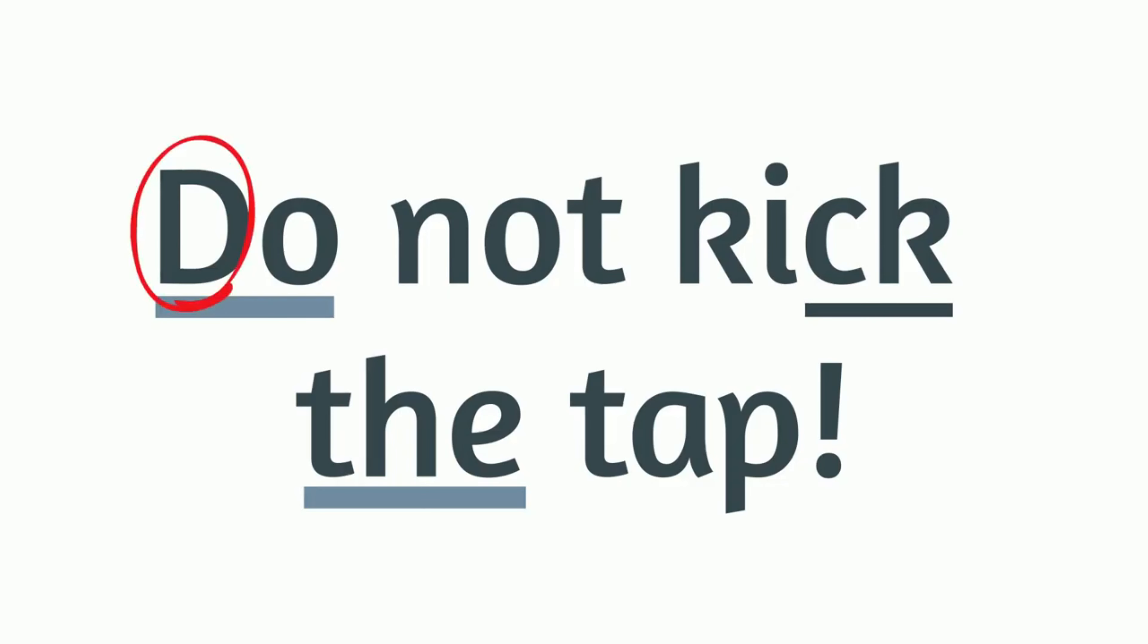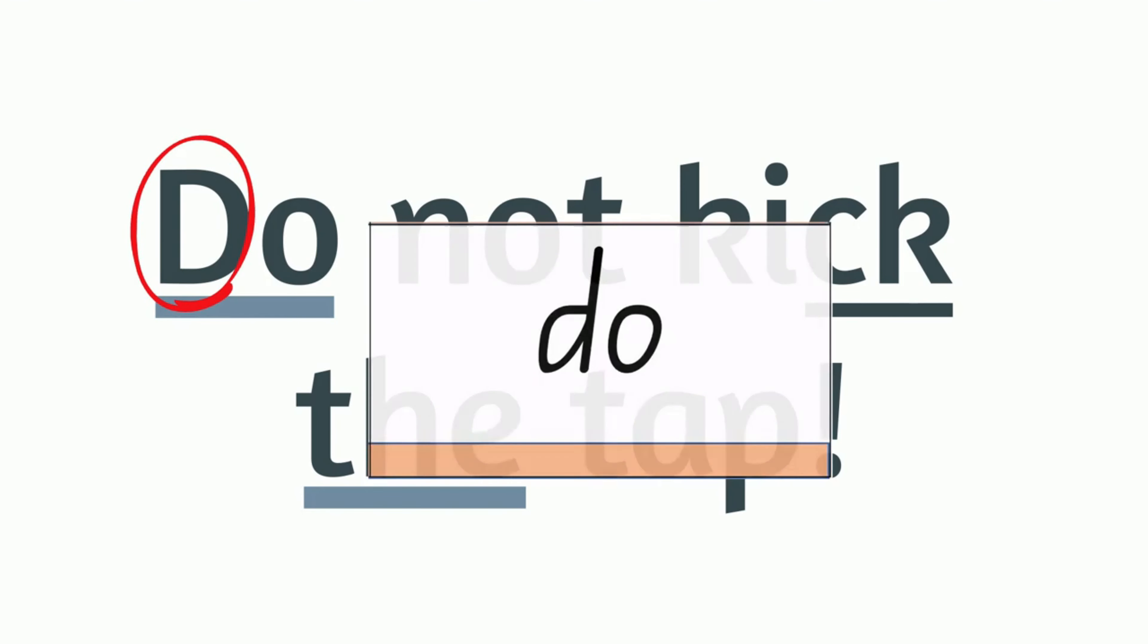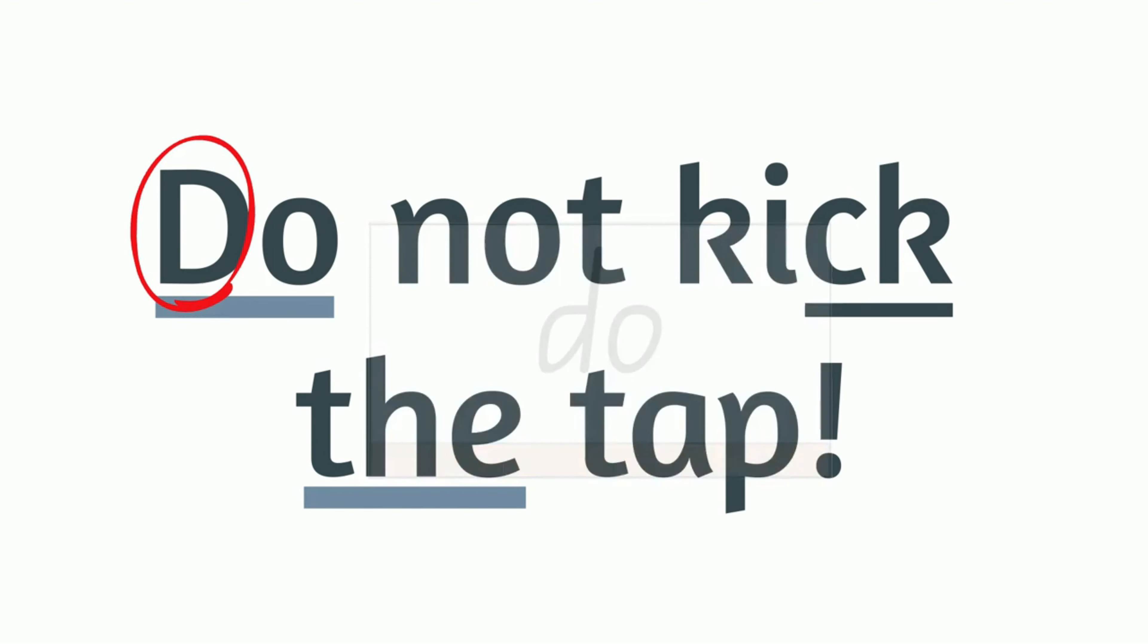This sentence begins with a capital letter. It's the capital D. Do you recognize the word? It's our tricky word 'do'. Let's read the sentence: Do not kick the tap. There's an exclamation mark there, so we need to say this with expression. Let's read the sentence fluently with expression: Do not kick the tap!